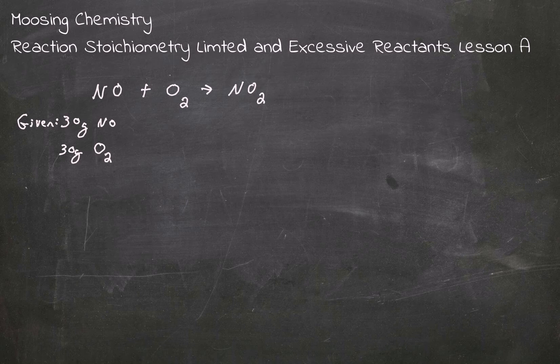Okay, so we have the equation NO plus O2 yields NO2. So we're given 30 grams of NO and 30 grams of O2. We want to know which one's the limited reactant.